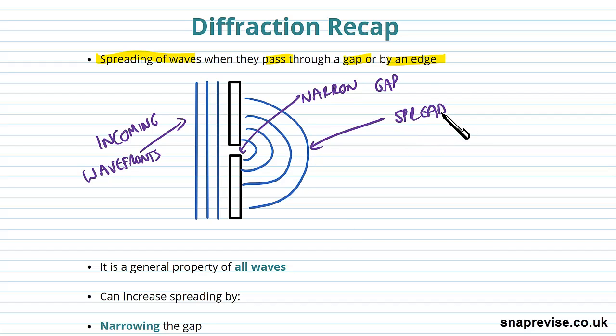This is the kind of thing that allows you, if you imagine this to be a doorway, for instance, this gap here to be a doorway. These could be acoustic waves, as in sound waves, someone's talking in a room, and that's what allows someone in the corner of a room to hear someone in the other room, and it's this diffraction, the spreading of the waves.